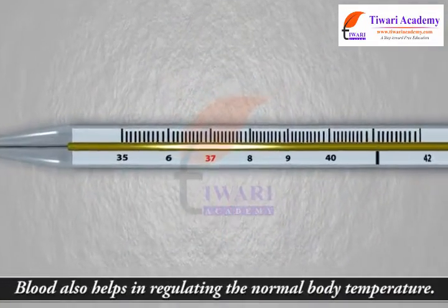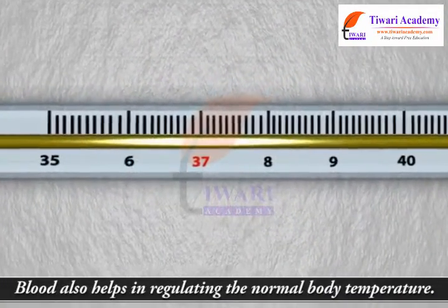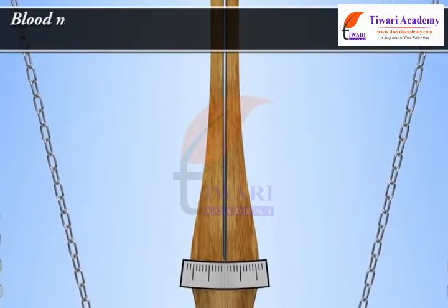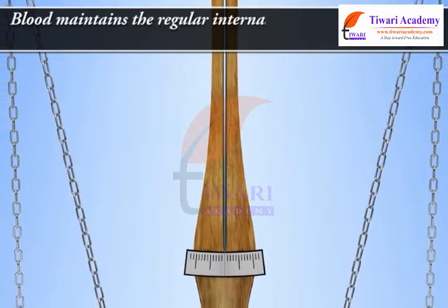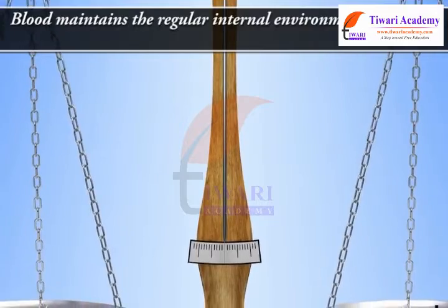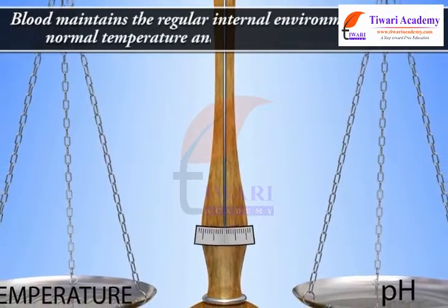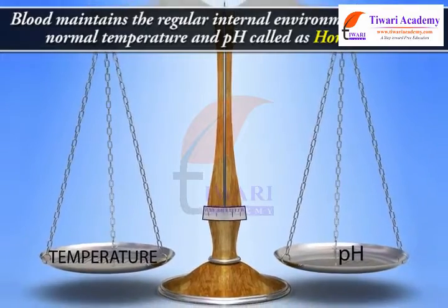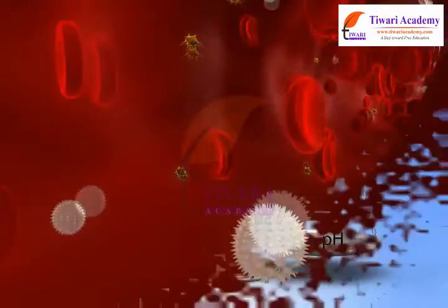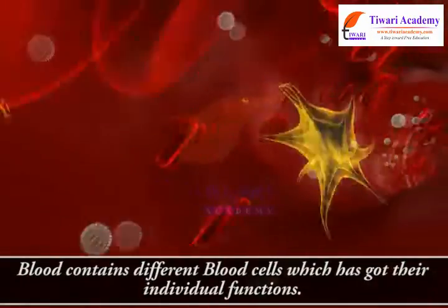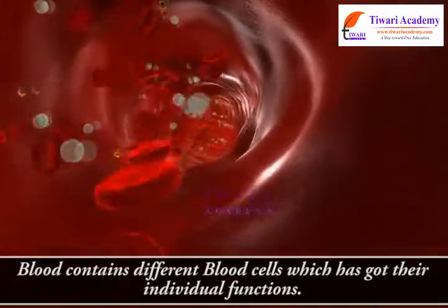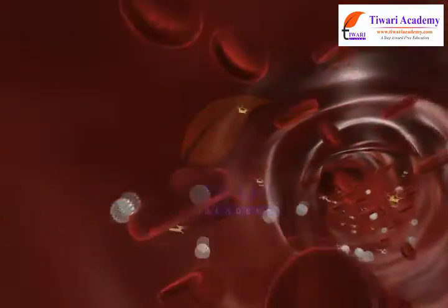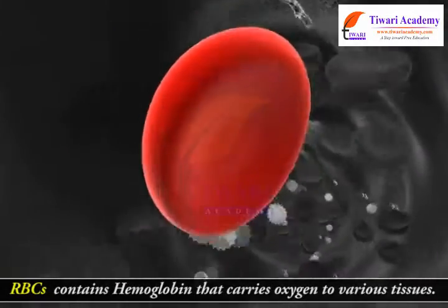Blood also helps in regulating the normal body temperature. Blood maintains the regular internal environment inside the body — that is, normal temperature and pH — called homeostasis. Blood contains different blood cells which have their individual functions.